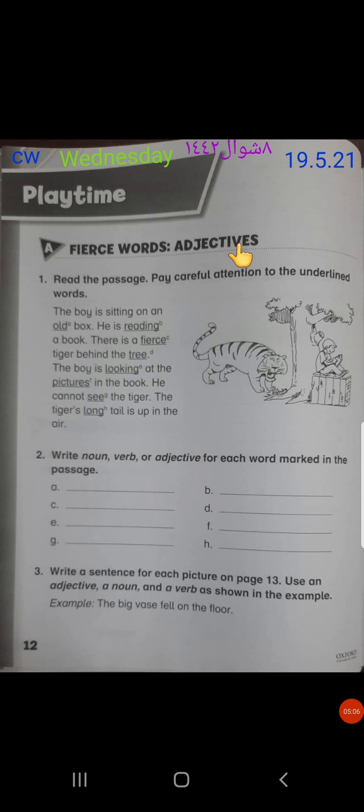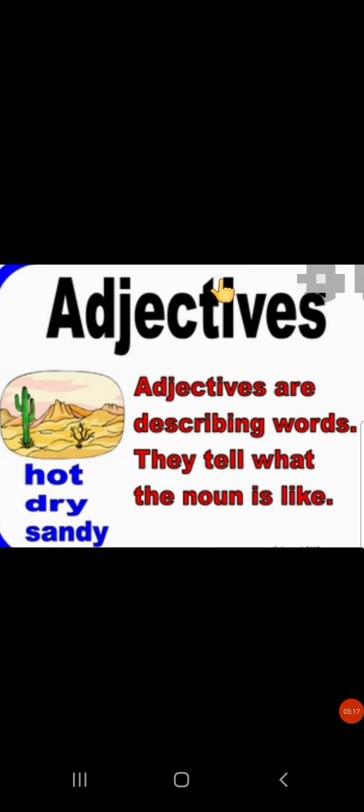Adjectives are the words which describes noun. They tell us about nouns. They give us more information about nouns. Like adjectives are describing words. They describe what the noun is like. For suppose they have given you a picture over here of a desert. It is hot, dry and sandy. All these three words are adjectives. Why? Because they are describing the desert. They are giving you the information about the desert.